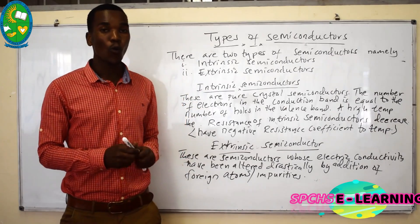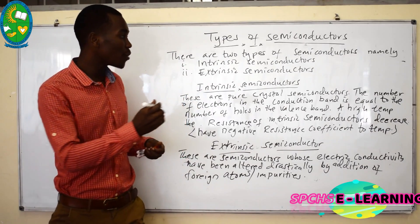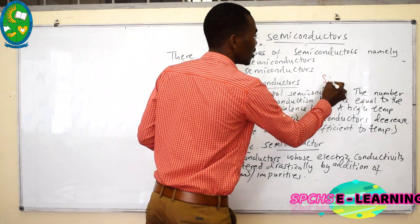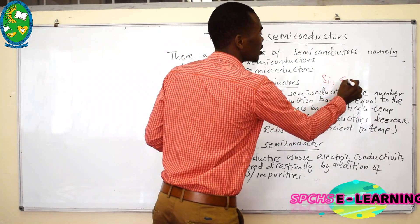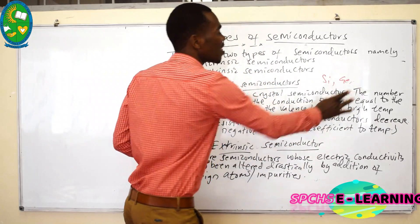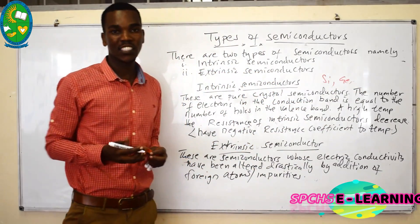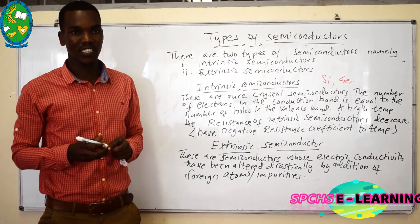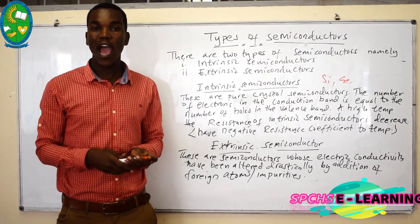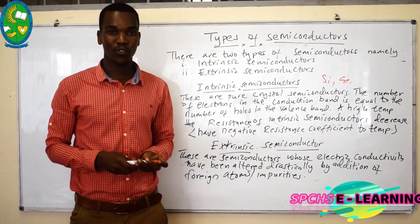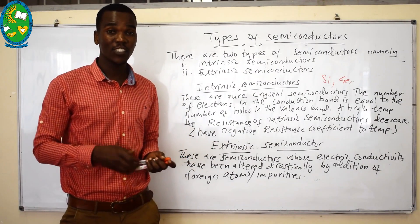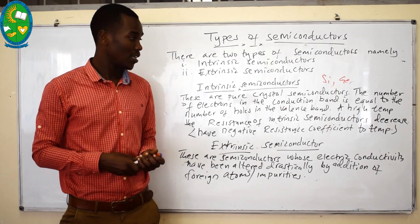For example, when we are talking about silicon or germanium, these are the pure semiconductors. In this material, there are no added atoms which can alter the electrical conductivity.